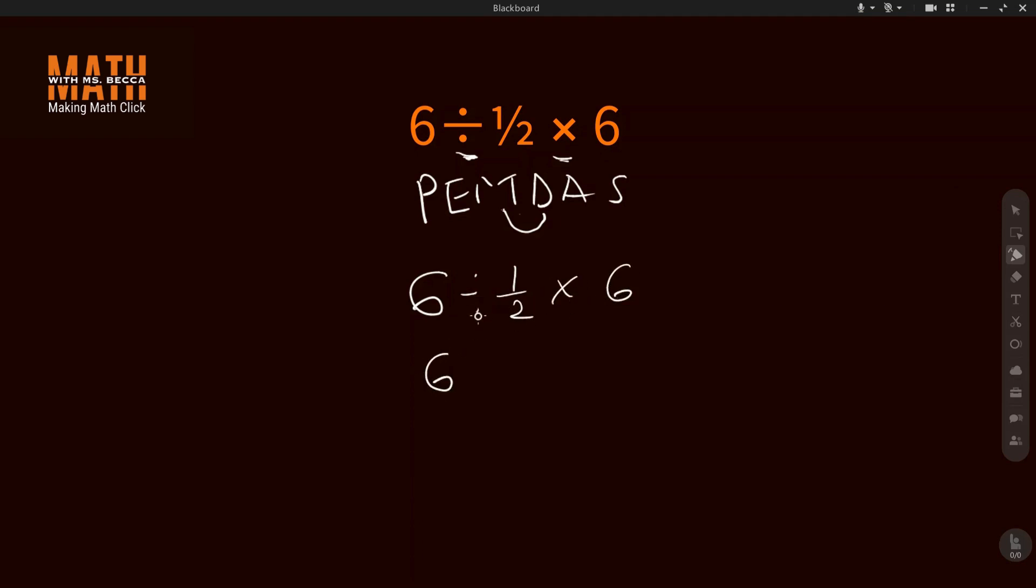we turn this division into multiplication, it will become 6 times 2 over 1, then times 6. This would give 6 times 2 times 6. 6 times 2 is 12, then we will have 12 times 6.